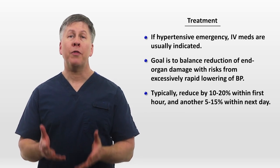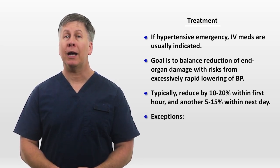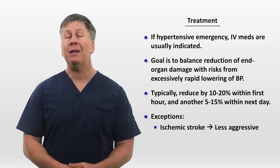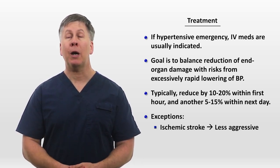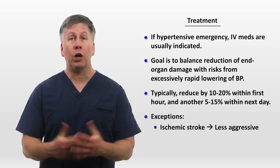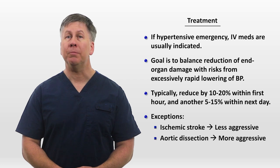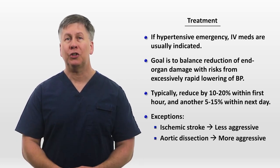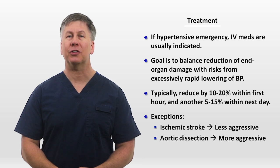Plus, there are some other notable exceptions. For example, in patients with ischemic strokes, you want to be less aggressive than this, possibly electing to temporarily hold off on lowering the blood pressure at all, whereas with an aortic dissection, you would want to be much more aggressive in addition to your emergent consult to vascular surgery.